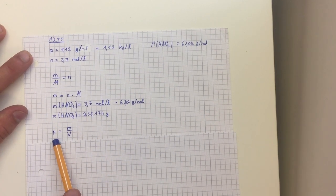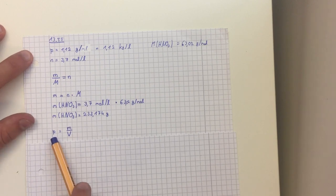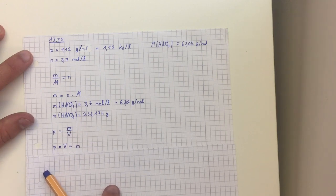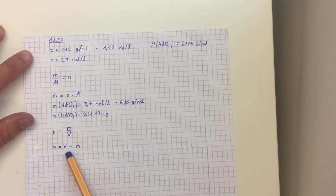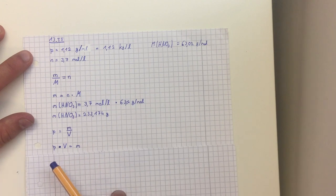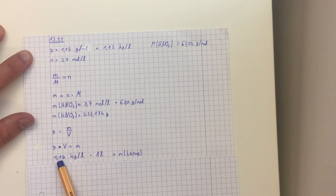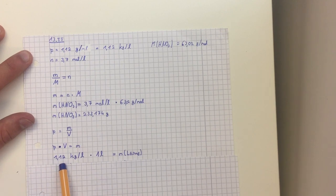Then we take the formula for density, which is equal to the mass divided by the volume. We adjust it to get the mass of the whole solution. We have the density at 1.12 kilograms per liter and a one liter solution, so the mass of the solution is 1.12 kilograms.